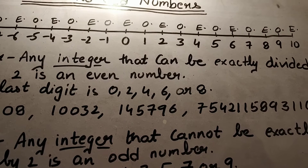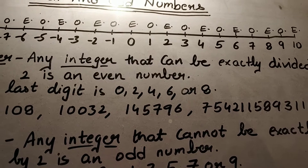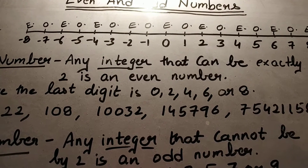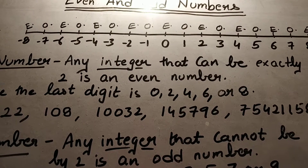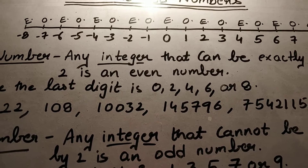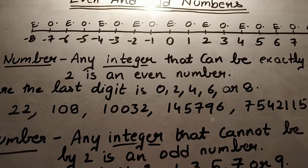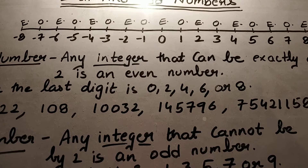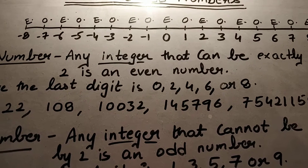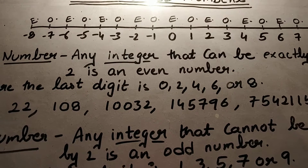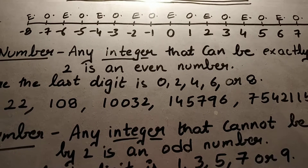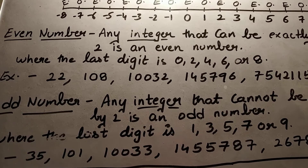The remaining numbers are odd ones. On the left hand side we can see minus one, minus two, minus three, minus four, minus five, minus six, minus seven, and minus eight. From these, minus two, minus four, minus six, and minus eight are all even numbers, and the remaining numbers are odd numbers.